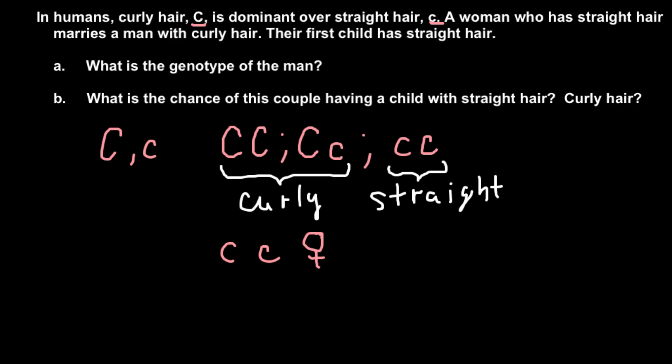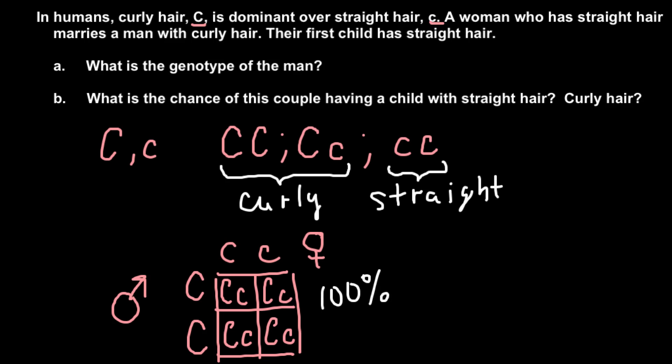For example, let the male be capital C, capital C genotype. So if we build a Punnett square, we can predict the outcome of such a cross. And as you see, here we have capital C, small c—four times. So as you see, 100% of the progeny would have curly hair because this genotype, capital C, small c, produces curly hair.